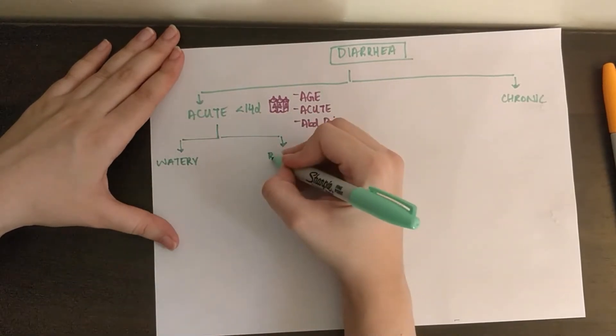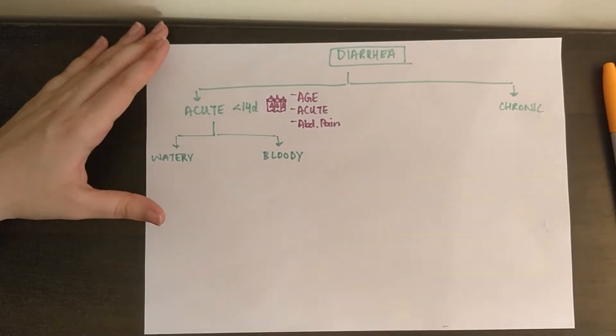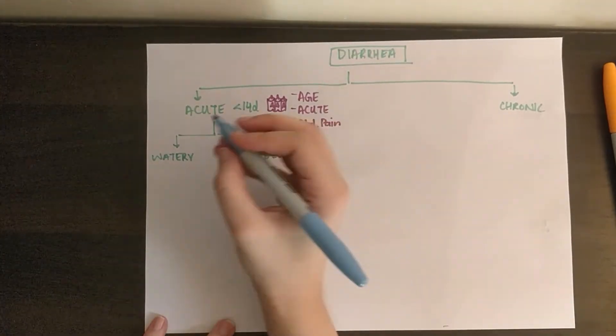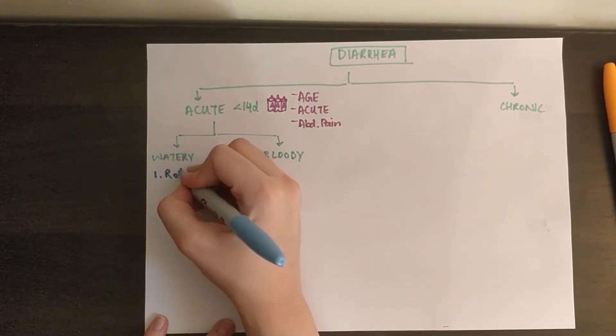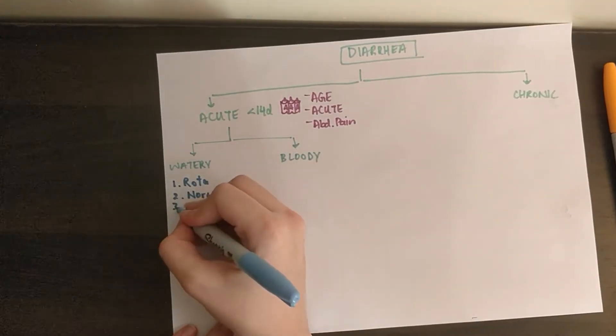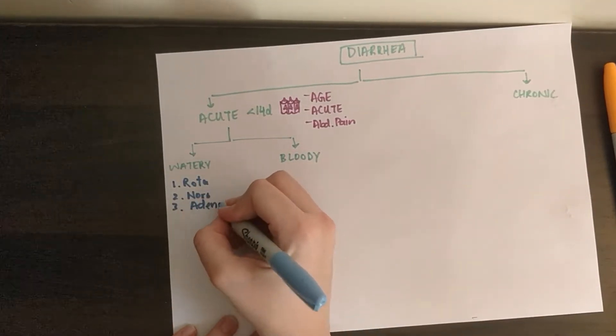So that's watery and bloody. Watery diarrhea is non-inflammatory and includes viruses like rota, noro, and adeno. Very non-specific question stems with a history of unhygienic conditions as they're feco-orally transmitted. That's out of the way.